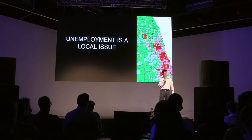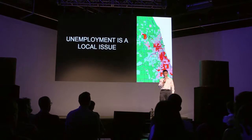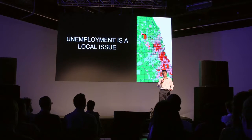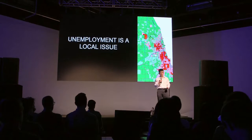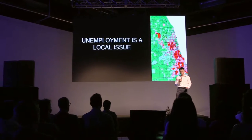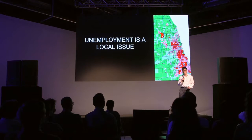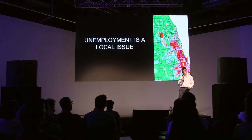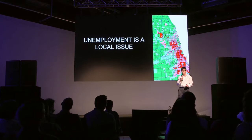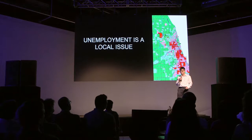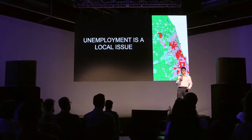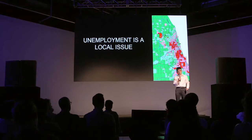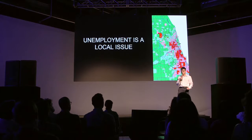When we hear about unemployment in the news, we often think of it as a broad national problem, and it is, but it starts as a local issue. As we can see from this map of the Chicago area, where the green regions are places with unemployment rates lower than 4%, and red regions are places with unemployment higher than 15%, the labor market landscape differs widely across areas, even within a single neighborhood.